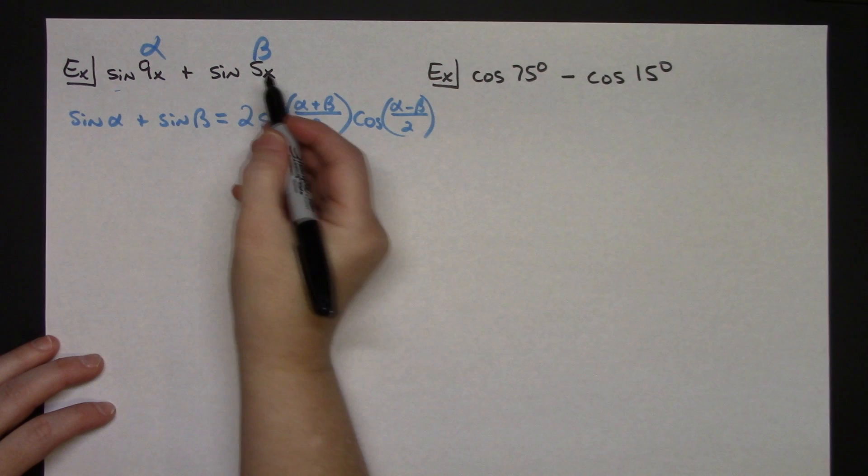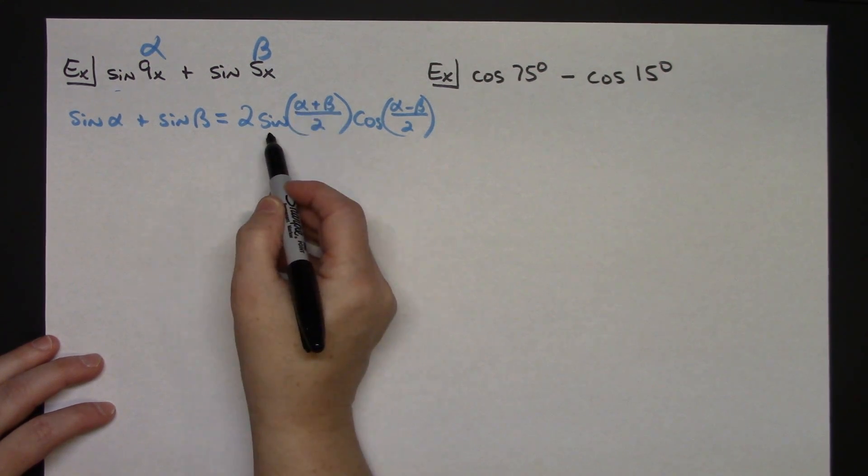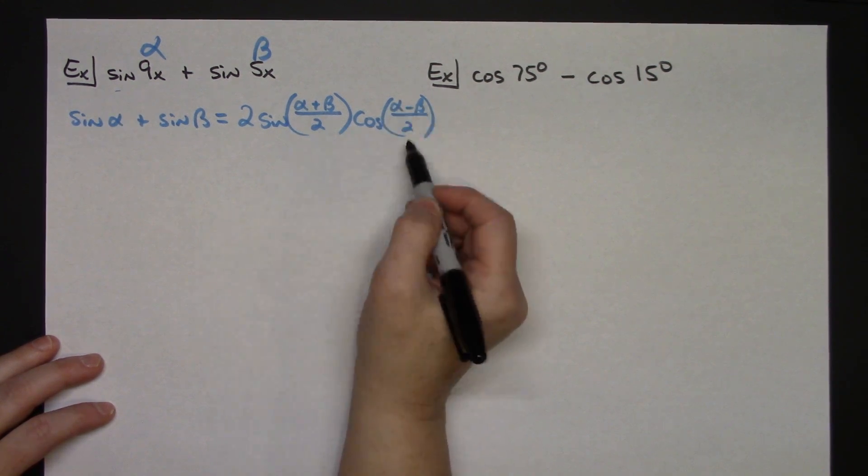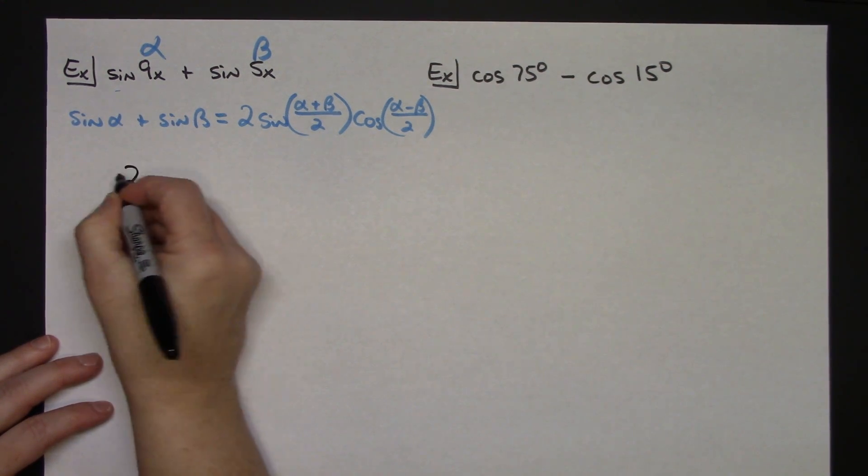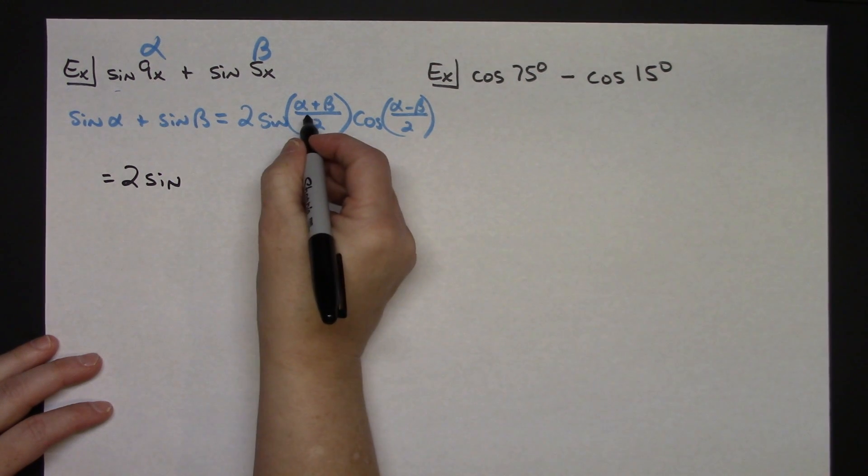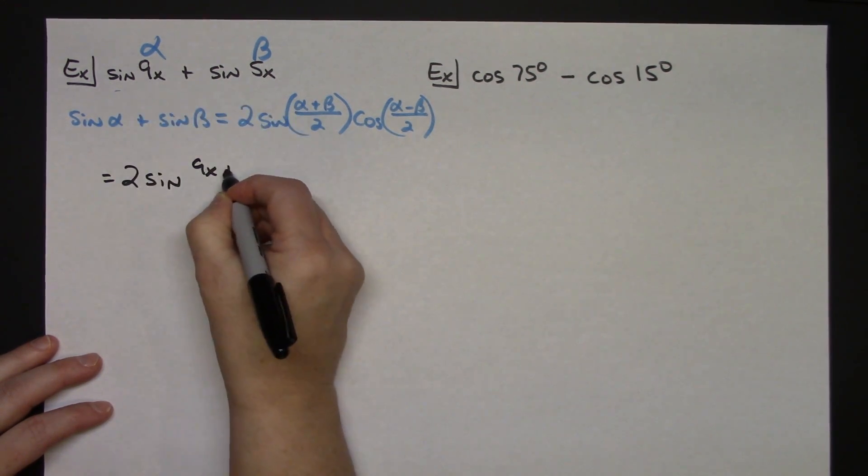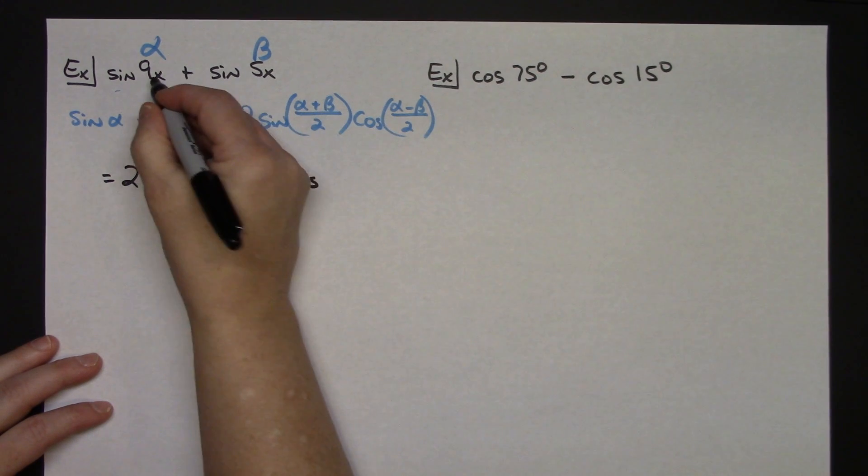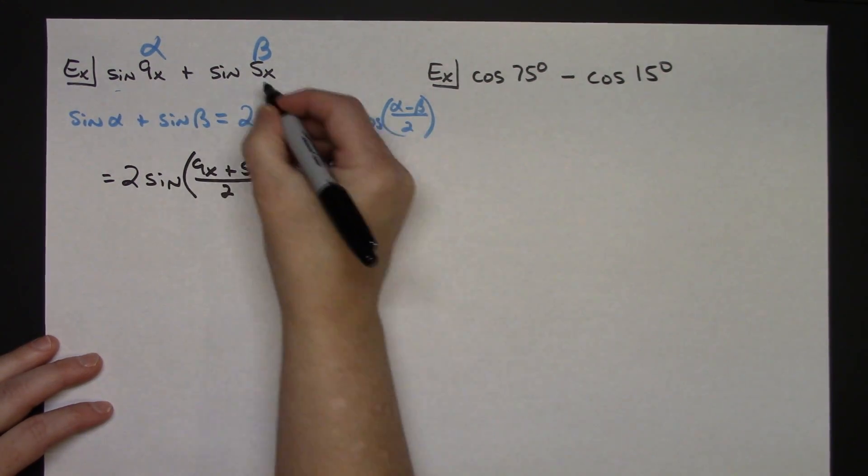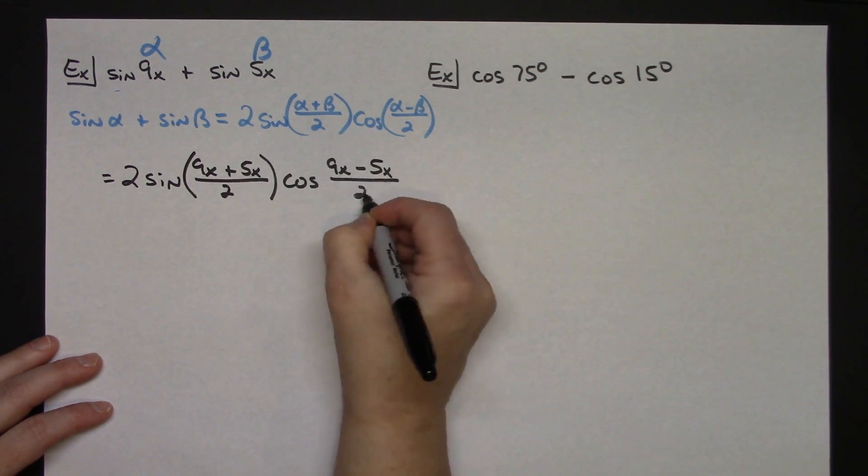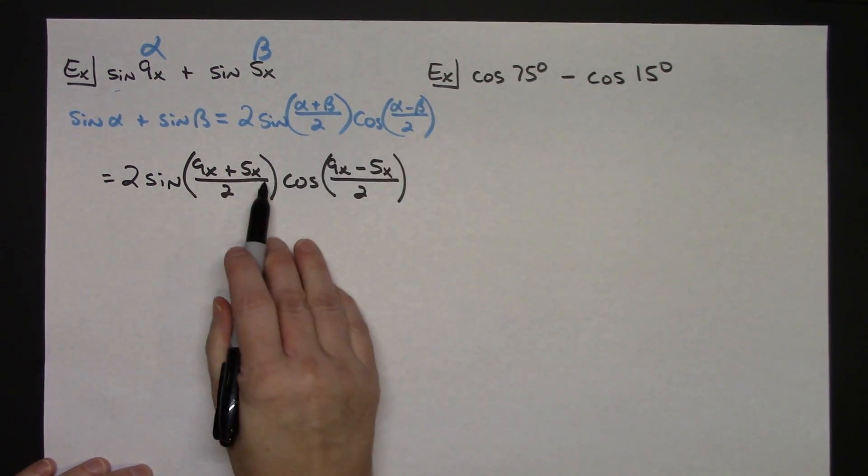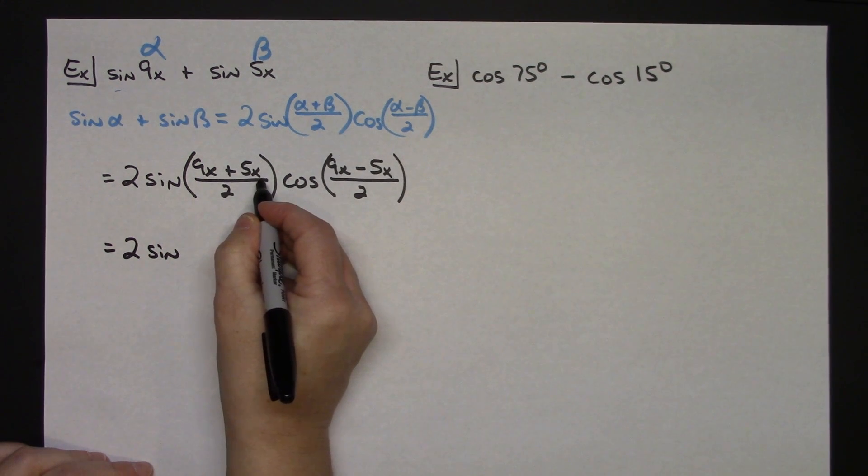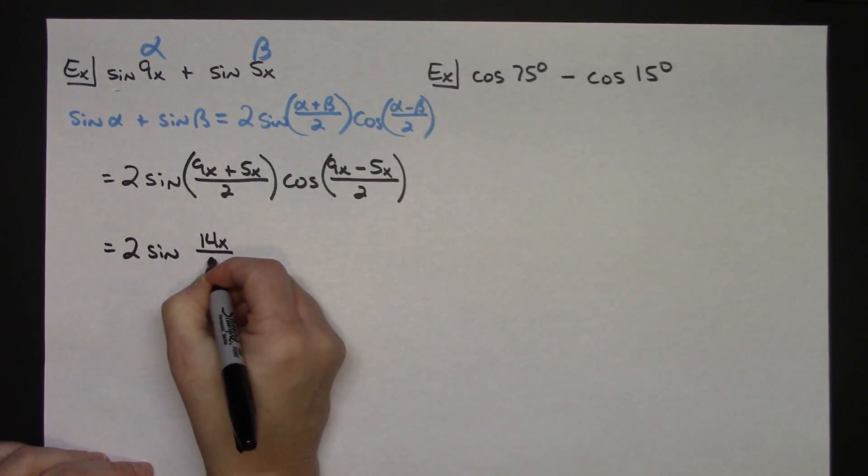So my alpha is 9x my beta is 5x. I'm going to have two times the sine of whatever I get when I add them divided by two times the cosine of whatever I get when I subtract them and divide by two. So two sine alpha is 9x plus beta is 5x divided by two, cosine my alpha is 9x minus my beta which is 5x divided by two. Now like terms I can add these I can subtract these so I can do a little bit of simplifying. Two sine.